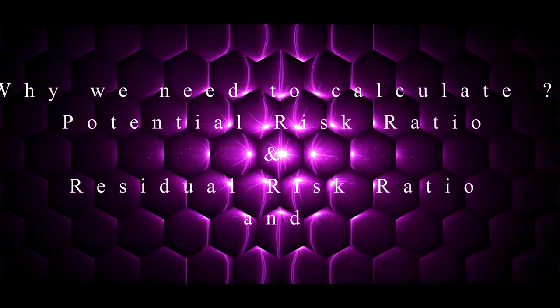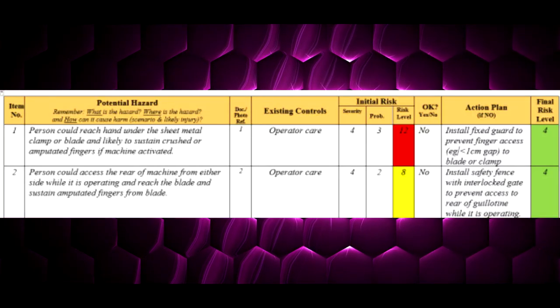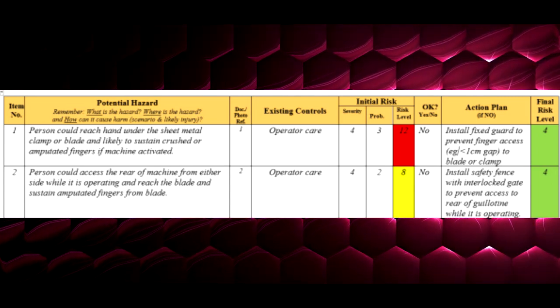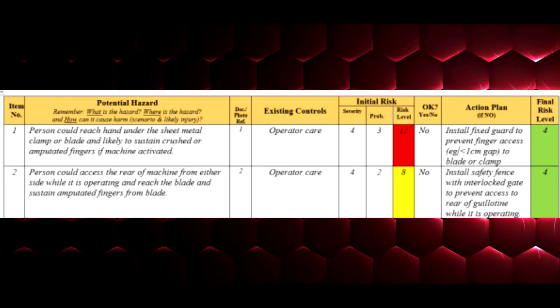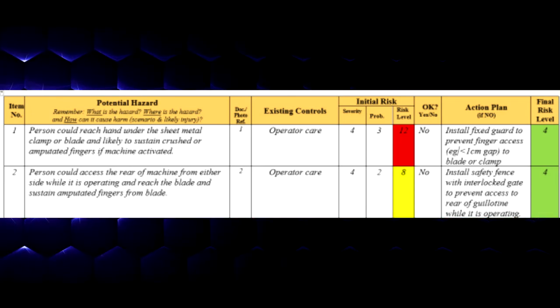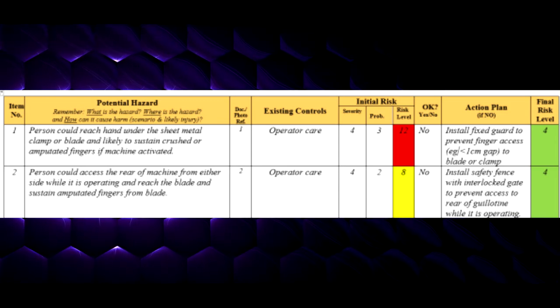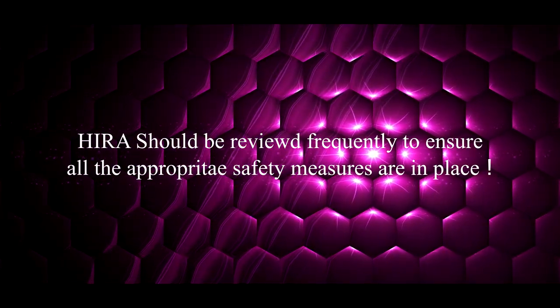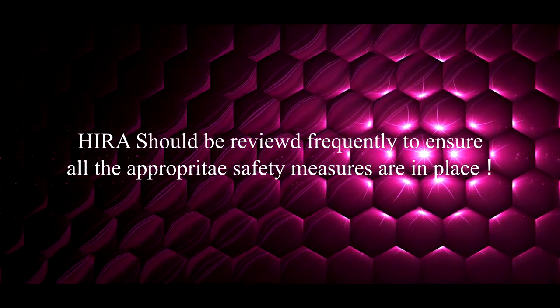You may wonder why we need to evaluate both potential risk and residual risk ratios. When making arrangements for control measures, you should give priority to the assessment with the highest potential risk ratio. The timescale to ensure control measures should be reasonable, and this hazard identification and risk assessment should be reviewed frequently to ensure that control measures are in place and adequate.